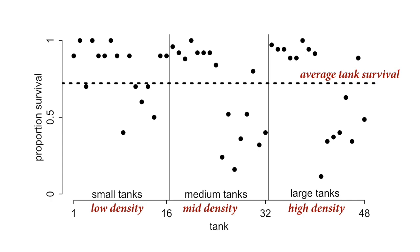Here are the raw data. The horizontal axis is just the tank index, grouped so that on the left are the low-density tanks, in the middle the medium-density tanks, and on the right the high-density tanks. The vertical axis is the proportion of tadpoles in each tank that survive. The horizontal dashed black line is the average survival across tanks — that is, the average of the survival rates across all tanks marginalizing over their densities.